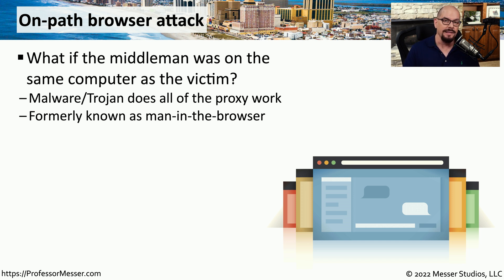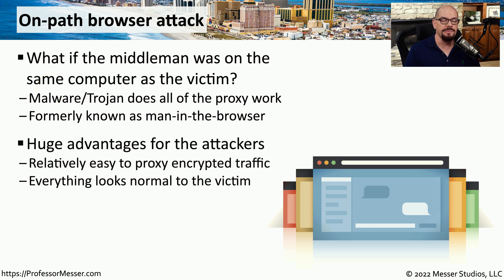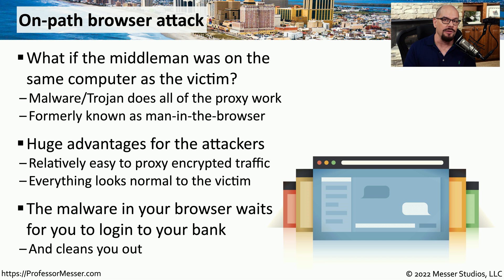There are ways to perform an on-path attack that don't have these limitations. One of these attack types is an on-path browser attack, where the middleman is inside the browser you're using. This means you don't have to be on a local subnet or gain access to a local network — you just need to gain access to that device so you can install the malware that will provide that on-path functionality. This solves a lot of problems with capturing traffic over the network, especially if the network traffic is encrypted. If you're capturing information in the browser itself, it hasn't been encrypted yet, and the attacker can see all of the information sent back and forth, monitoring everything you type and receive in that browser session.